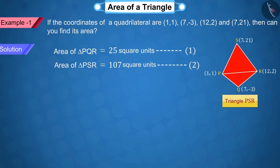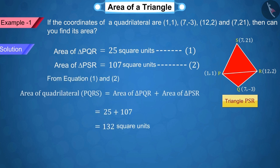Since the area of the quadrilateral is equal to the sum of the areas of these two triangles, the area of the quadrilateral is equal to 132 square units.